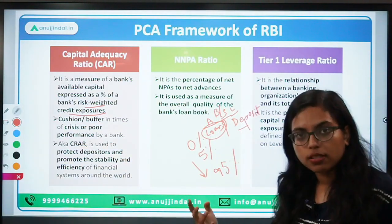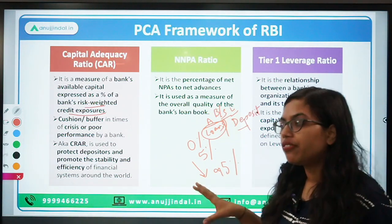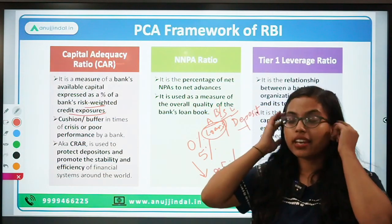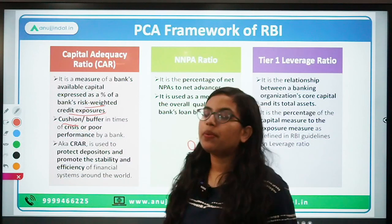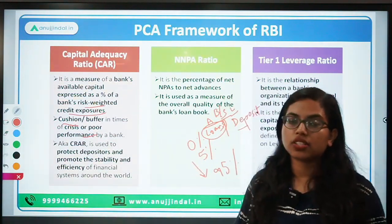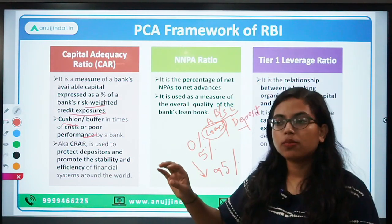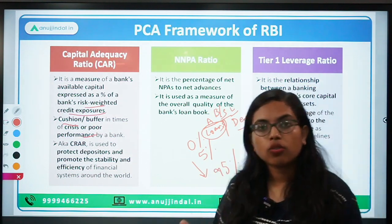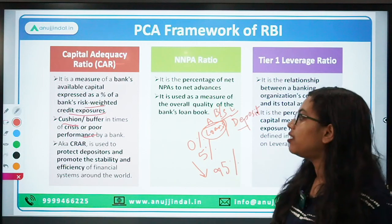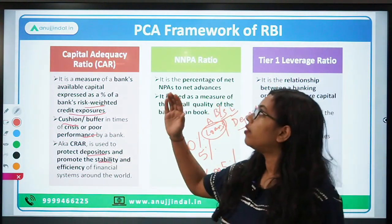RBI has mandated different CAR percentages for different regulated entities — for example, 9% for scheduled commercial banks and 12% for small finance banks. The purpose of maintaining CAR is that it acts as a cushion: if the bank is underperforming or there is a crisis, this reserved capital can be used. If all capital is deployed, bank insolvency becomes a risk. CAR also provides confidence to depositors and ensures stability in the financial sector.